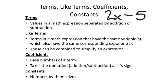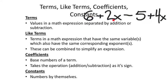Like terms are terms that either have the same variable or just don't have any variables at all, and they also need the same exponents. The nice thing about like terms is they can be combined to simplify an expression. If you add a positive 4x term, the 2x and 4x are like terms you can combine. You could also add a 6 and a negative 5 — those constants are like terms — but you can't combine non-x terms with x terms since they're not like terms.